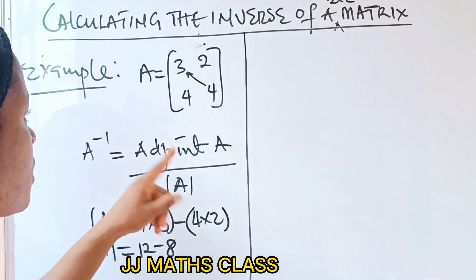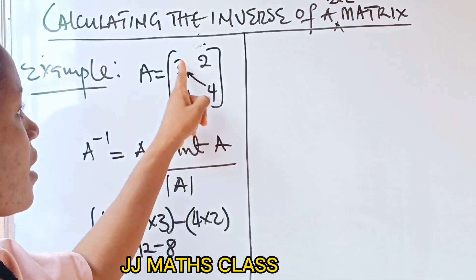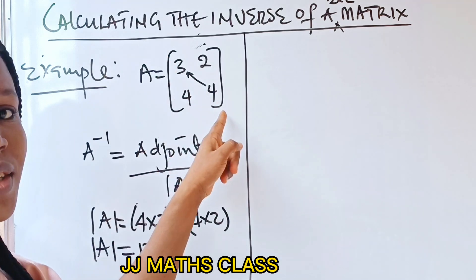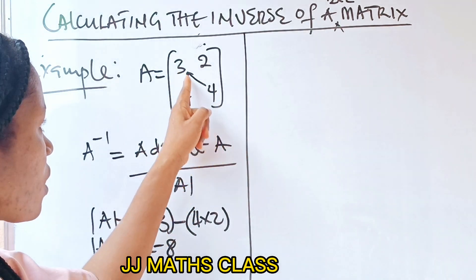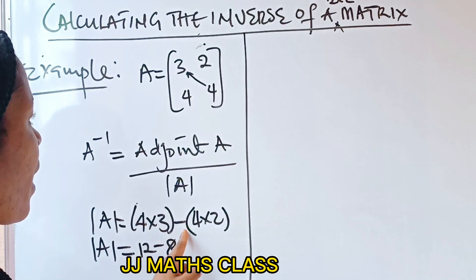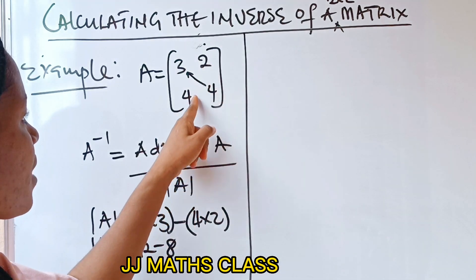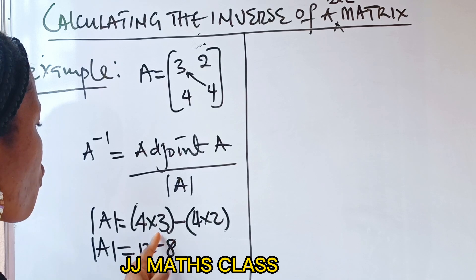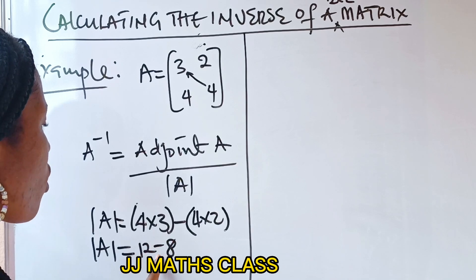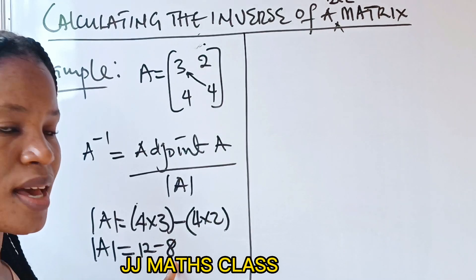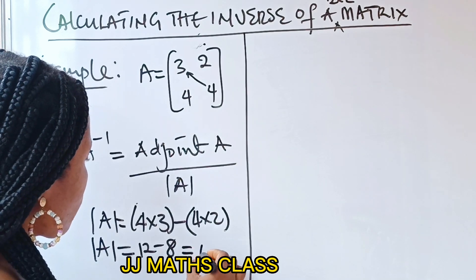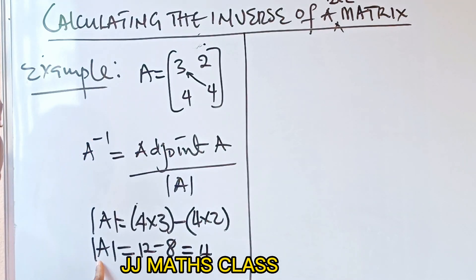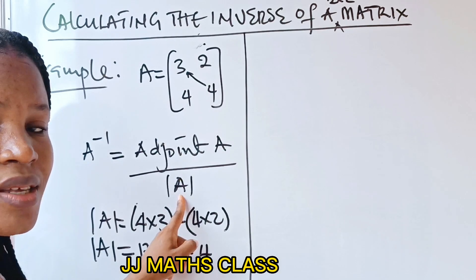In recap, these are the elements of your leading diagonal. You multiply them first: 4 by 3, which is 12, minus 4 by 2, which is 8. When you subtract them, you get 4. So our determinant of A is 4.